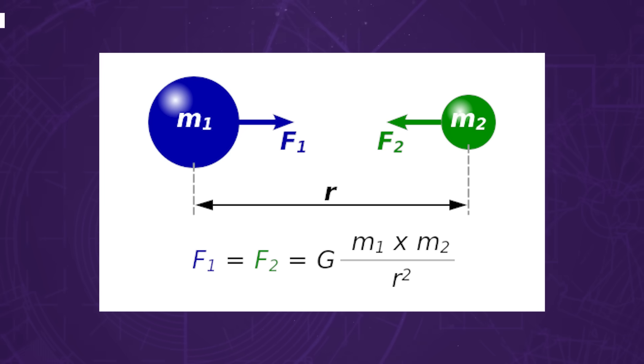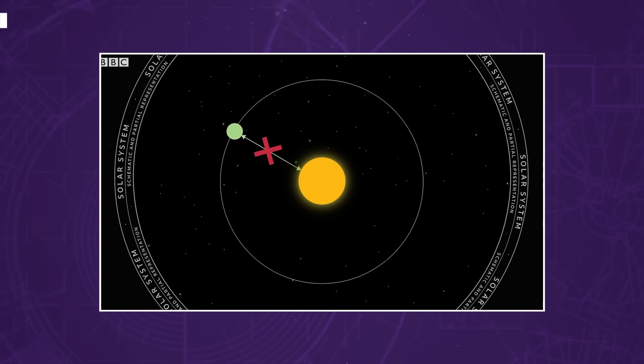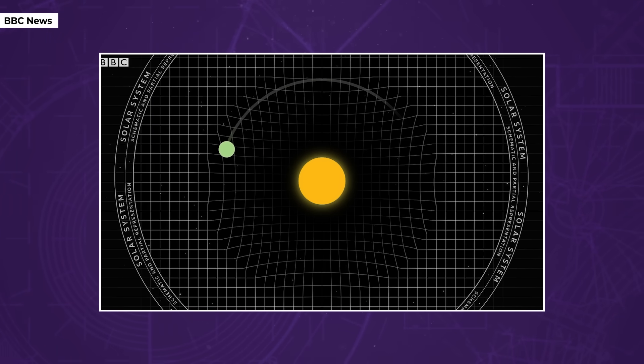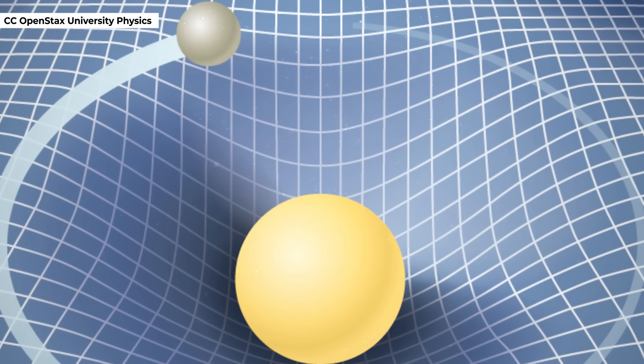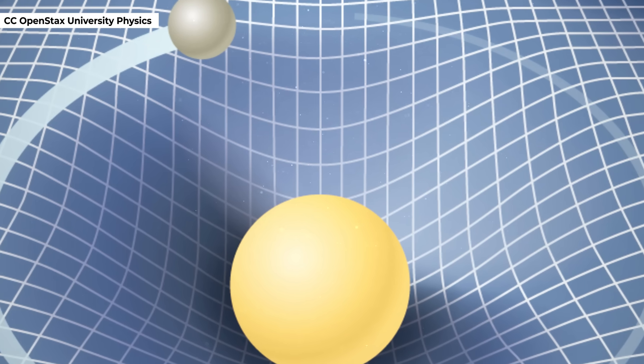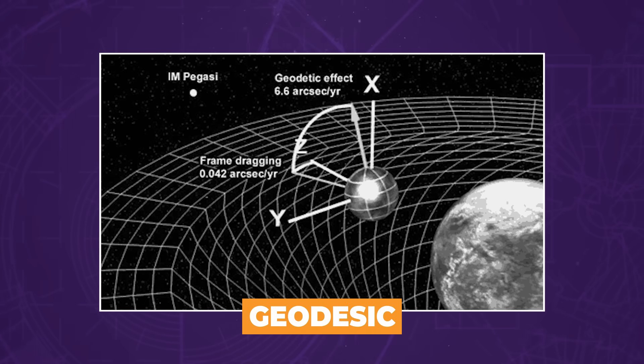In a Newtonian model, your path through space would be a straight line, bent by gravitational attraction curving your path toward the object. What Einstein showed is that it isn't really your path through space that is curved, but rather space itself. Mass bends and stretches spacetime, and as a consequence, what you perceive as a straight path is actually curved along this warped terrain, moving you toward the attracting mass. This straight-yet-curved path is called a geodesic.